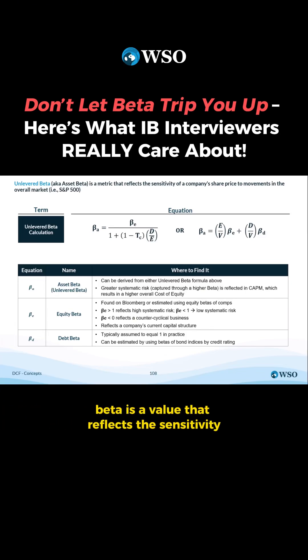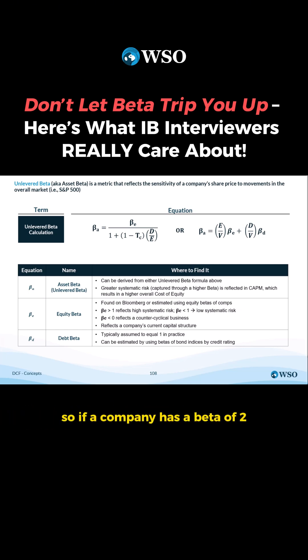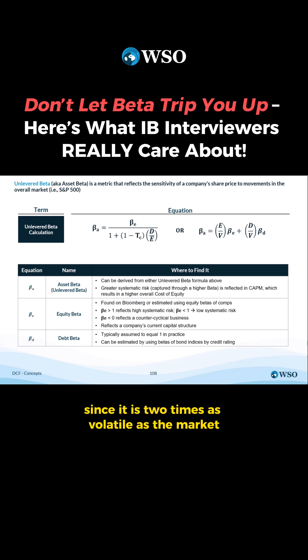Beta is a value that reflects the sensitivity of a company's share price relative to movement in the overall market. So if a company has a beta of 2 and the market goes up 5%, the company's stock would be expected to increase by 10%, since it is 2 times as volatile as the market.